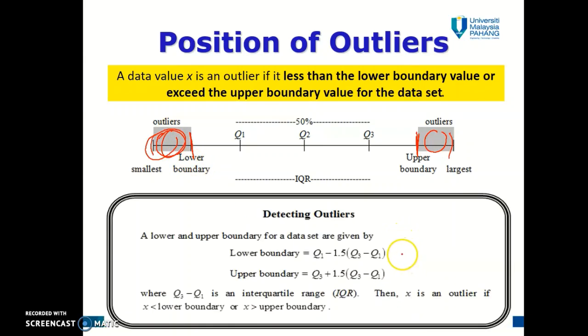So any data that belongs in between this, any data value that is greater than the upper boundary and any data value that is smaller than the lower boundary is considered as outliers in your data set. And this is the formula for you to calculate the lower and upper boundary of a certain data set. For lower boundary, it's Q1 minus 1.5 multiplied by the IQR. For the upper boundary, it's Q3 plus 1.5 multiplied by the IQR.